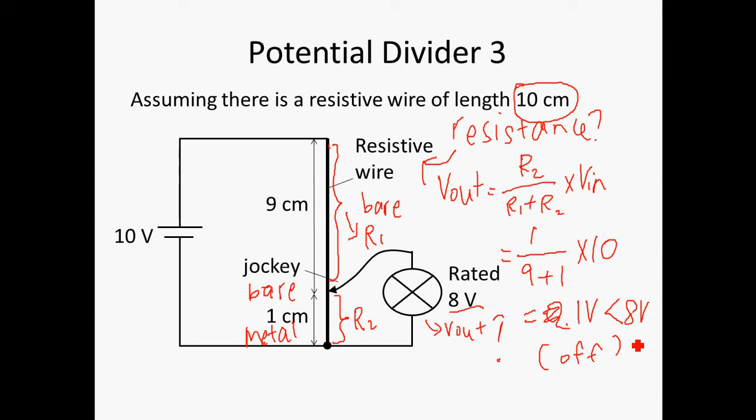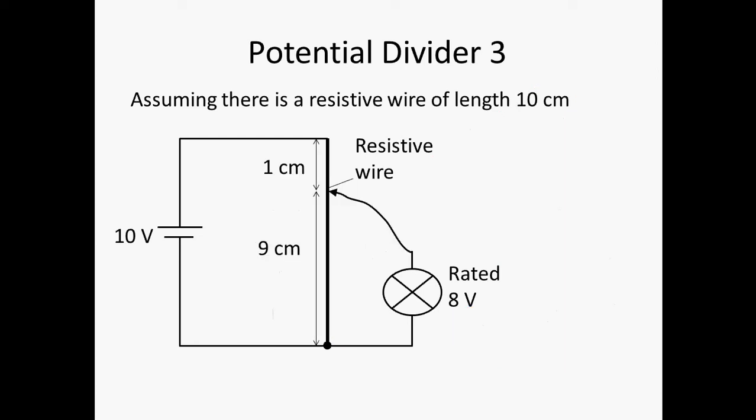What if we move the jockey up to this point? If we move the jockey up to this point, your R2 becomes much larger and your R1 becomes much lesser. In this case, your output voltage will be equal to 9 over 1 plus 9 times 10. If you work out the answer, it will give you 9 volts, which is larger than 8 volts, so the device turns on. You realize that just by moving the jockey from here to here, you can actually turn on the device or make it even brighter in this case of a lamp.